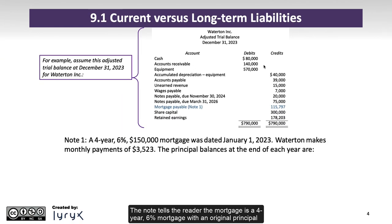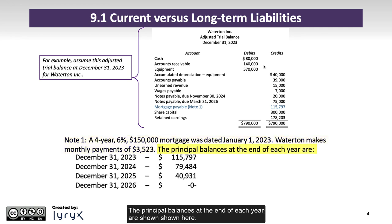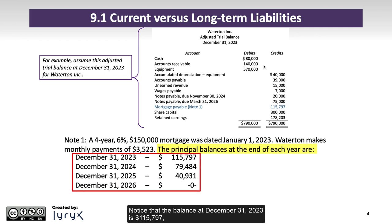The note tells the reader the mortgage is a four-year, six-percent mortgage with an original principal balance of $150,000, dated January 1, 2023, with monthly payments of $3,523. The principal balances at the end of each year are shown here. Notice that the balance at December 31, 2023 is $115,797, and that matches the balance shown on the trial balance.